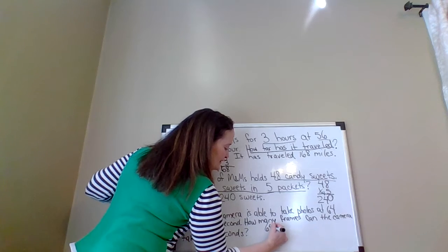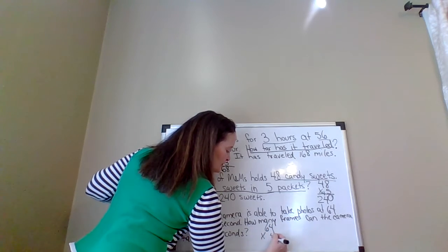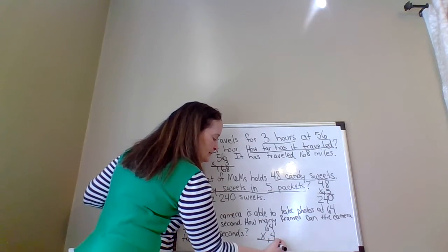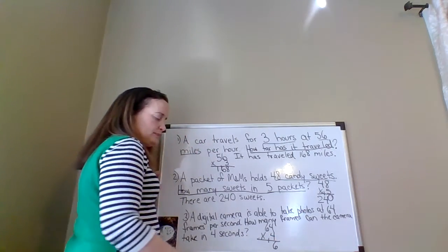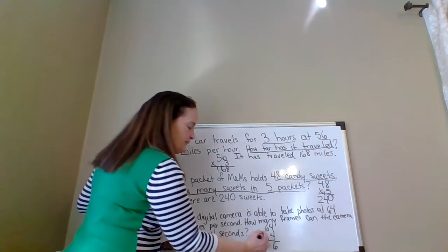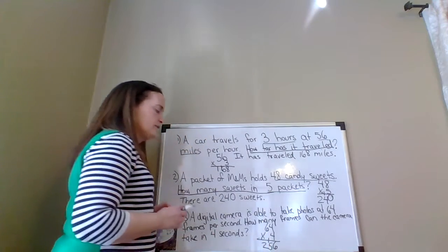Here we're going to multiply 64 times 4. 4 times 4 is 16. We put the 1 in the tens place, the 6 in the ones place. 6 times 4 is 24 plus 1 is 25. Our answer is 256.